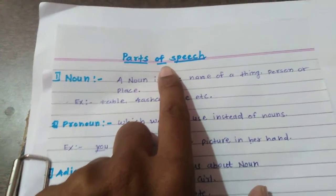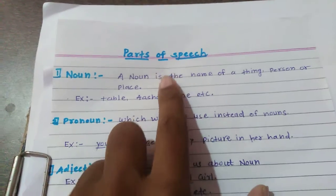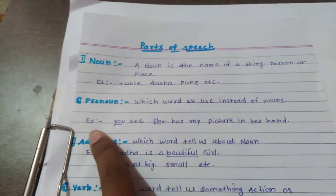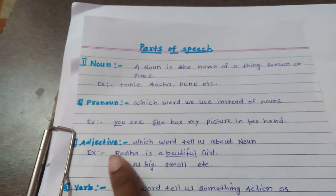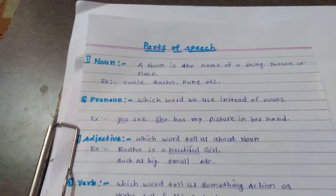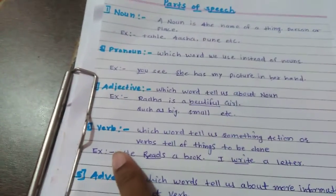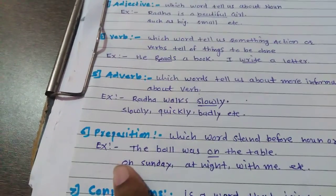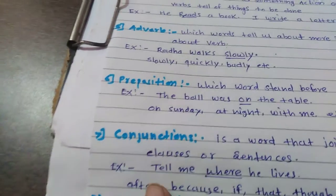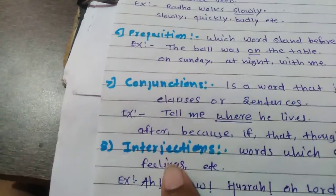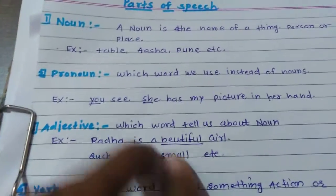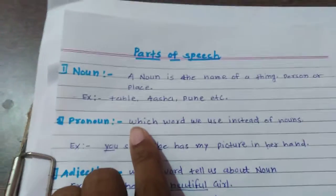there are eight parts of speech: noun, pronoun, adjective, verb, adverb, preposition, conjunction, and interjection. These are the parts of speech in English.